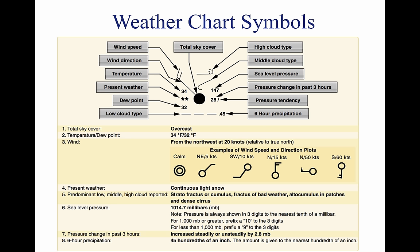A station model includes: 1. Type of observation — a round model indicates an official weather observer made the observation; a square model indicates the observation is from an automated station. 2. Sky cover — the station model depicts total sky cover shown as clear, scattered, broken, overcast, or obscured/partially obscured. 3. Clouds — represented by specific symbols; low cloud symbols are placed beneath the station model, while middle and high cloud symbols are placed directly above. Typically only one type of cloud will be depicted.